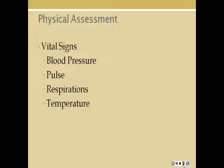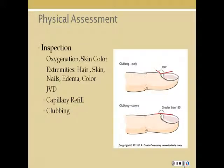Get a full set of vital signs: blood pressure, pulse rate and rhythm — this should be listened to apically for at least one full minute — as well as lung and respiratory status and temperature. On inspection, look for how they are oxygenating: skin color, extremities, hair distribution, skin temperature and moisture, nail appearance — are they clubbed? — any cyanosis, jugular vein distension, and capillary refill. These are all clues to potential cardiac issues.